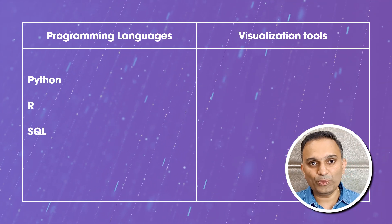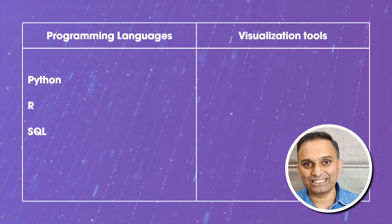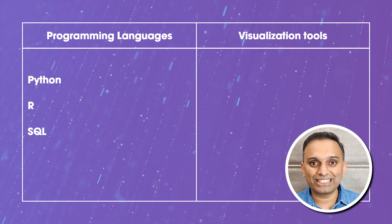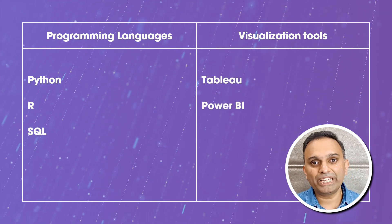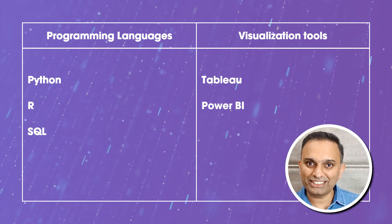The programming languages that can help you get started with data analysis are Python, R, and SQL — which is why there is a lot of demand for these specific tools today. The tools that can help you improve your data visualization and communication skills are Tableau and Power BI. These skills will help you land visualization jobs in the data analytics industry. These are the different skills and toolkits you need to learn.